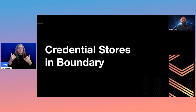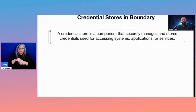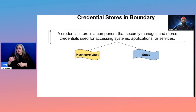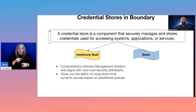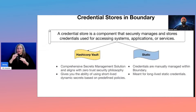Now let's see what credential stores are in Boundary. A credential store is a component within Boundary that securely manages and stores credentials used for accessing systems, applications, or services. In Boundary, we have two different types of credential stores: one is HashiCorp Vault and the other is a static credential store. HashiCorp Vault is a comprehensive secrets management solution aligning with zero-trust security, giving you the ability to use short-lived dynamic secrets based on predefined policies. On the other hand, the static credential store has credentials manually managed within Boundary and is only meant for long-lived static credentials.